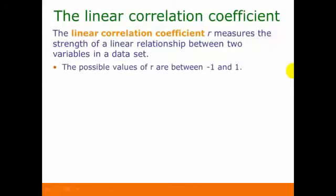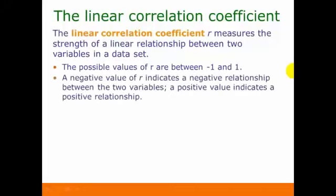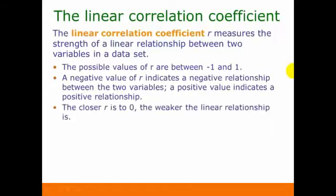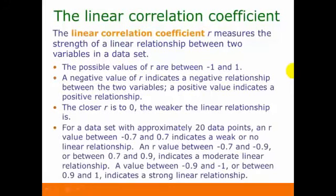The possible values of R are anything between negative 1 and positive 1. A negative value of R indicates a negative relationship between the two variables, and a positive value indicates a positive relationship. The closer R is to 0, the weaker the linear relationship is.